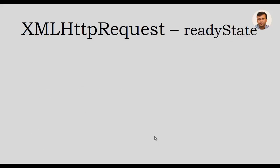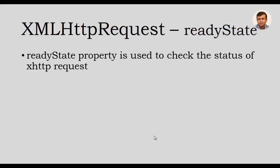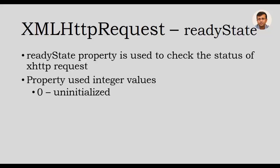We will now look at the readyState property. readyState is a property of the XMLHttpRequest object and is used to check the status of the HTTP request. This property uses integer values from 0 to 4. The value 0 indicates uninitialized, meaning the XMLHttpRequest object is instantiated but the open method has not been called. The value 1 denotes open, meaning the object is instantiated and open has been called.